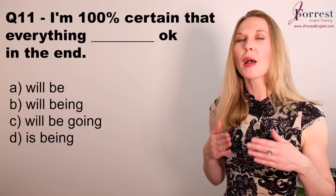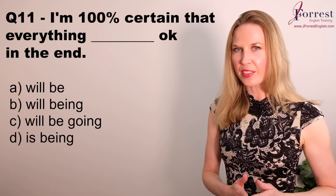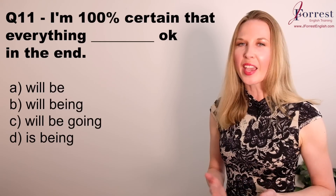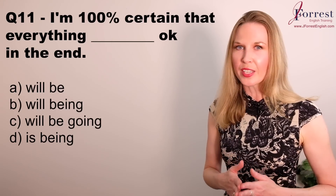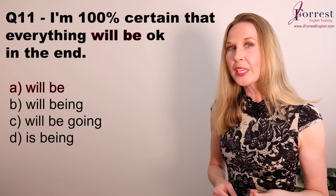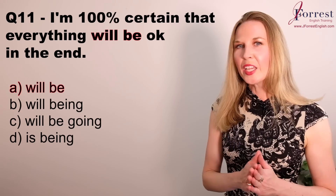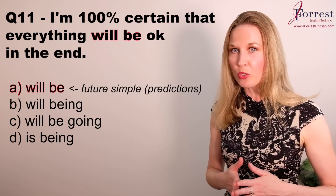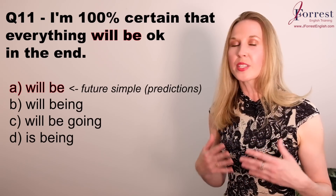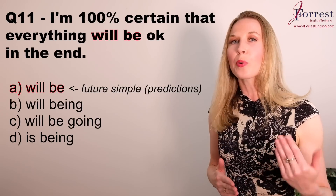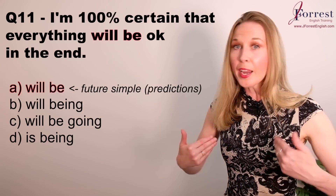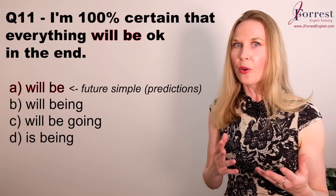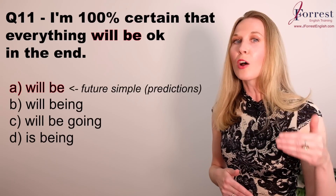Number eleven: I'm 100% certain that everything will be okay. We use the future simple 'will be' when making predictions about the future. Even though I say 100% certain, it's still a prediction because I don't control the future — the outcome is still unknown, and I'm making a prediction about it.